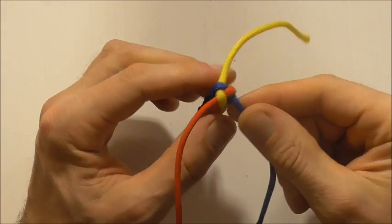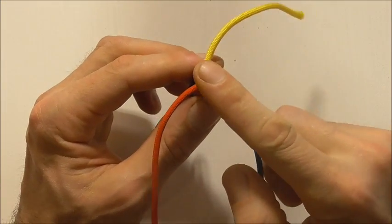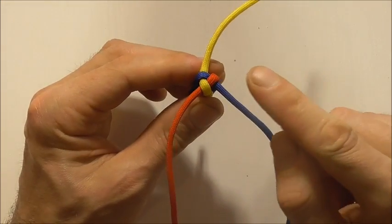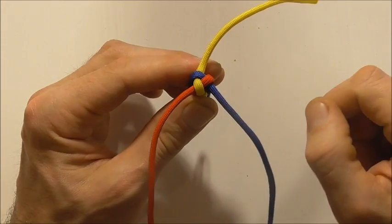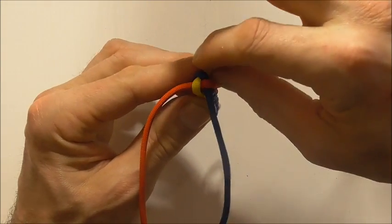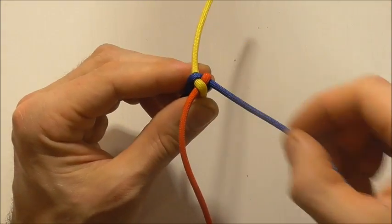Once you get the crowning to the desired length there's a few ways you can finish this one off. The easiest is just to make sure that this final crown knot is nice and tight and then cut and singe these excess pieces.